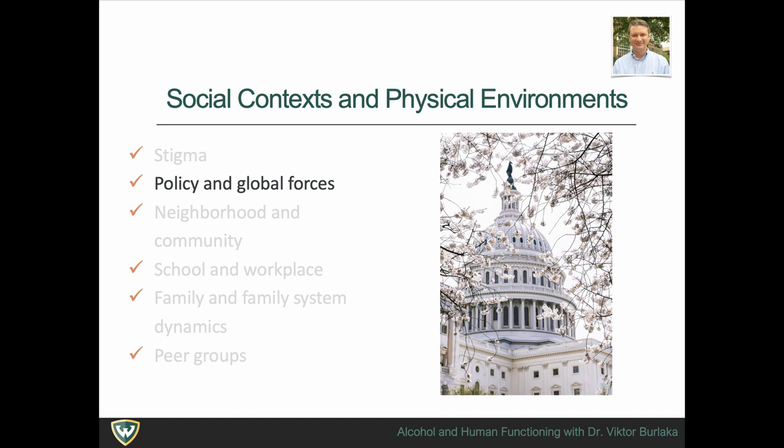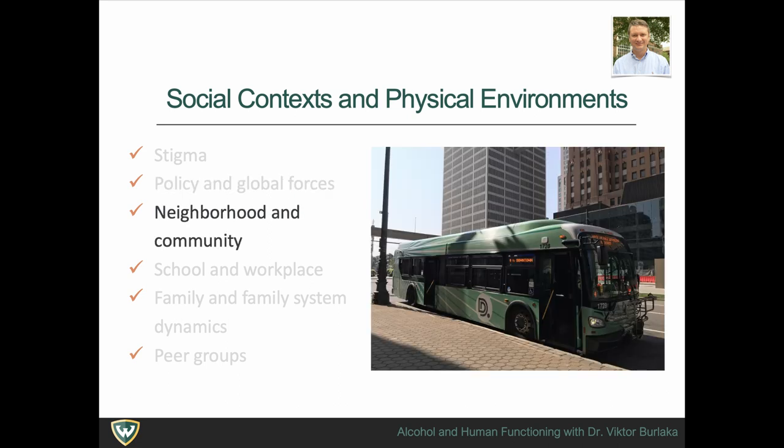State and federal policies that increased the legal drinking age and established a uniform blood alcohol level for intoxicated operation of a motor vehicle are examples of social control actions that influence alcohol use at the individual level. The physical environment is another factor that can increase or limit a person's access to alcohol—easier access increases opportunities to obtain it and makes its use more normalized.